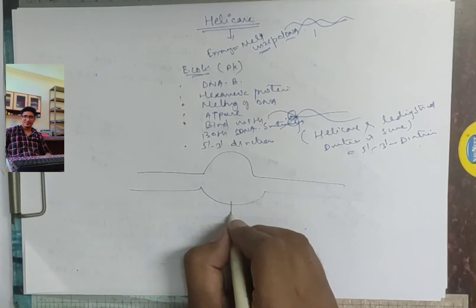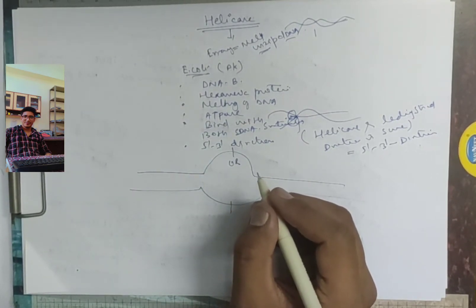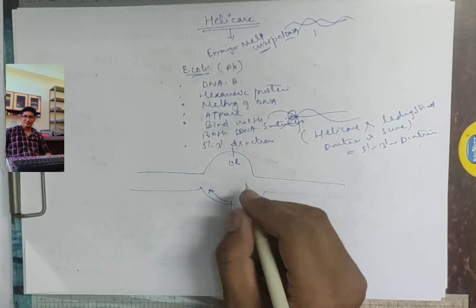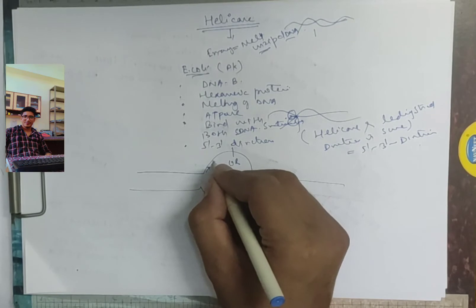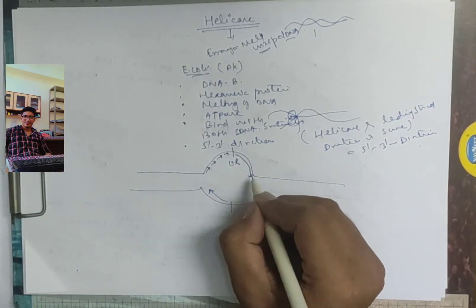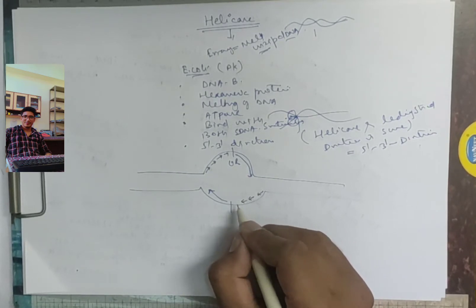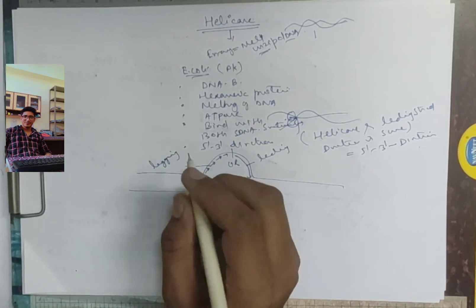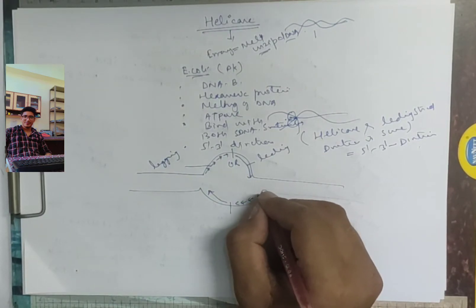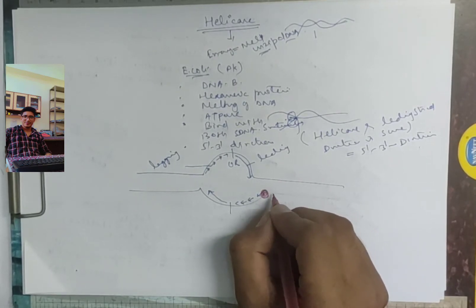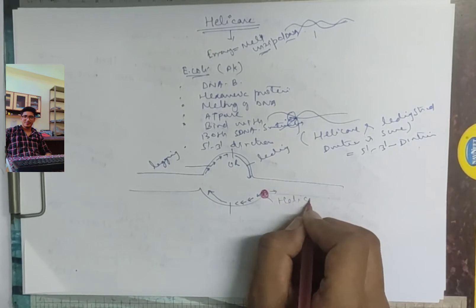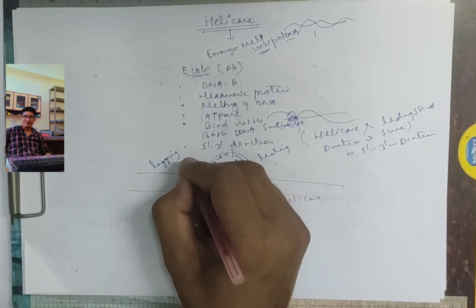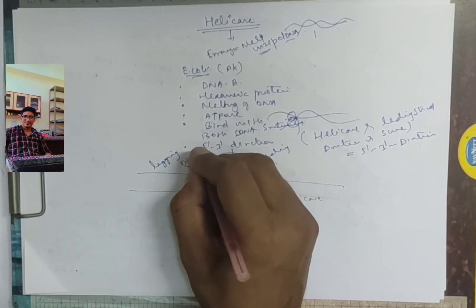This is a replication fork, and this is the origin of replication as discussed in previous lectures. This is the leading strand template and this is the lagging strand. Helicase or DNA B binds here and moves in this direction along the template strand.